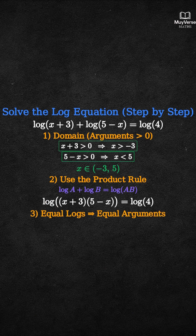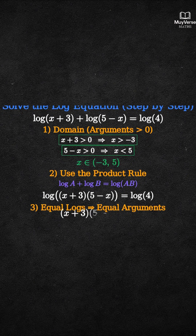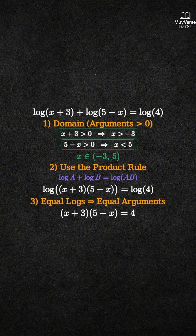Step 3: When logarithms with the same base are equal, their arguments are equal. So we drop the logs and set the insides equal: (x plus 3) times (5 minus x) equals 4.